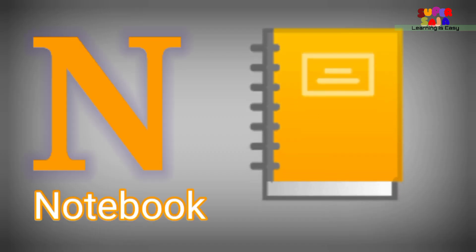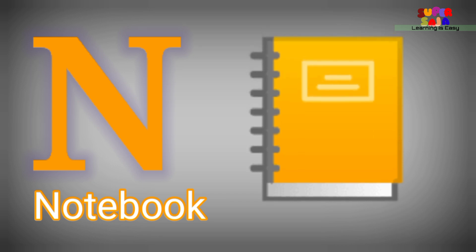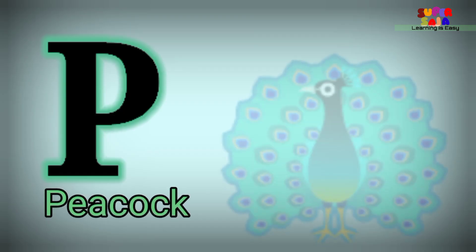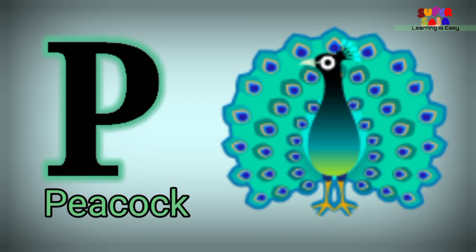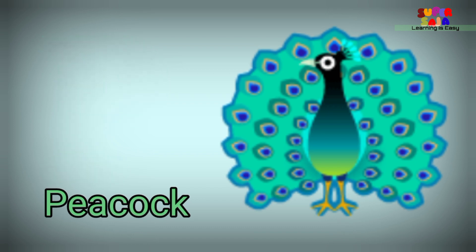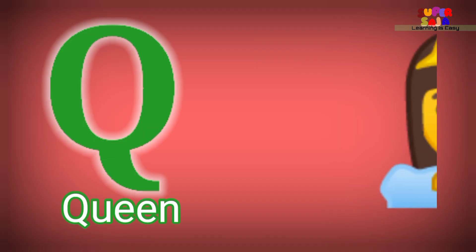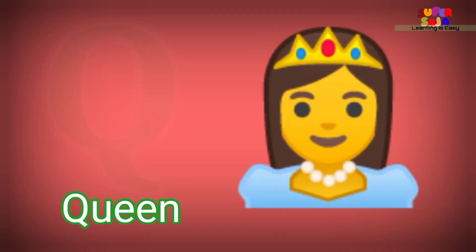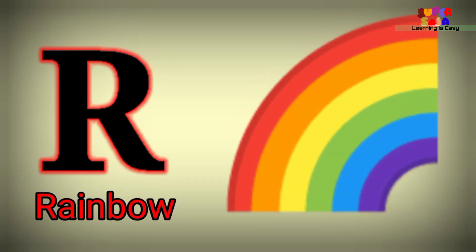N for notebook, O for orange, P for peacock, Q for queen, R for rainbow.